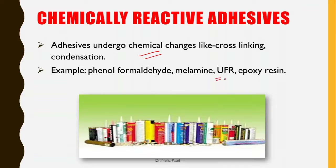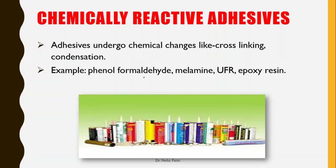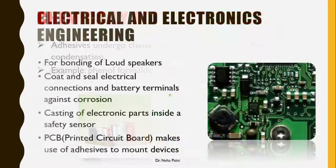Chemically reactive adhesives react chemically with the adherent compound. UF resin is a good example — if you have an adherent and apply UF resin adhesive, it forms a bond with it. UF resin has linkages like –N–CH₂–N–CH₂– in its structure, and it has a C=O group. The oxygen forms a hydrogen bond with the adherent, and this is how it reacts chemically to act as an adhesive.